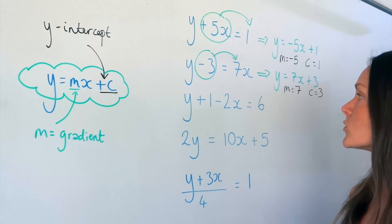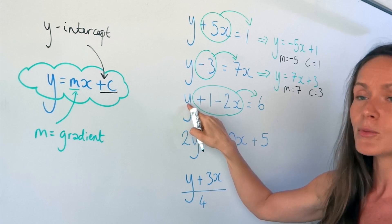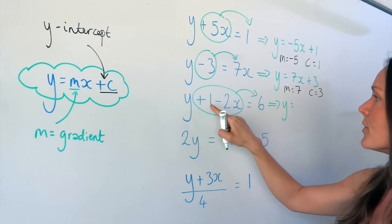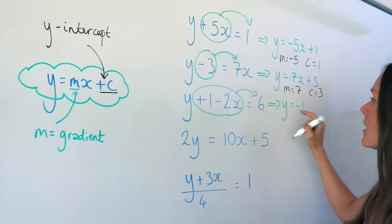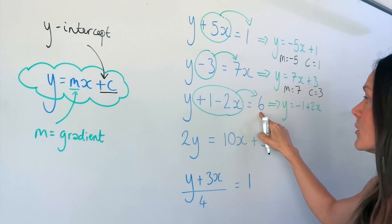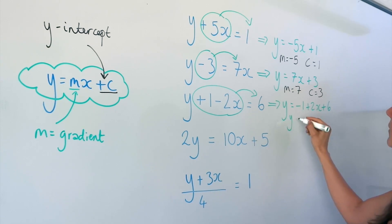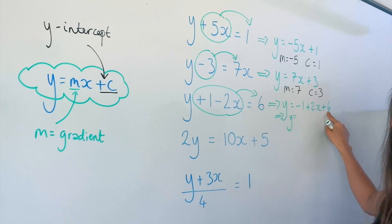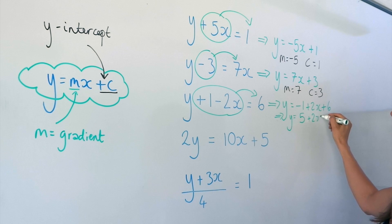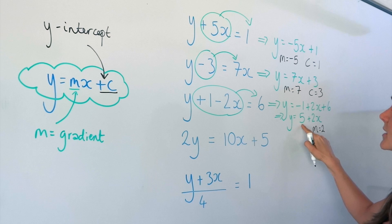This one's even harder — this time we've got to move more than one term to the other side. I'm going to move everything over to the right so I'm left with y on the left-hand side. This positive 1 changes to a negative 1, this negative 2x changes to positive 2x, and the 6 didn't move so it's still positive 6. I can then simplify: minus 1 plus 6 is 5, so the equation becomes y equals 2x plus 5. The gradient m is positive 2 and the y-intercept c is positive 5.